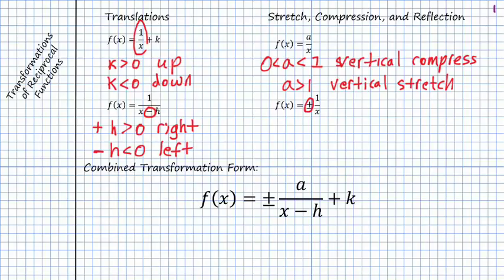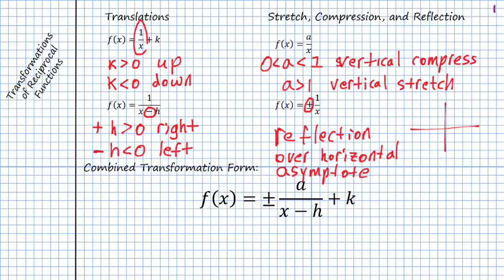And then finally we have our plus or minus. And that will just tell us if we get reflected. So if you have a vertical, if you've got this plus or minus, it's going to be a reflection over the horizontal asymptote. All right, and then what we'll see is it'll look something like this. So instead of being in quadrant 1 and 3, it'll be in quadrants 2 and 4. So that's how the reflection will look there.